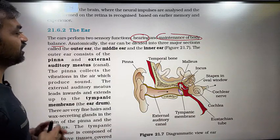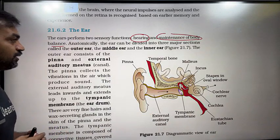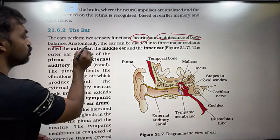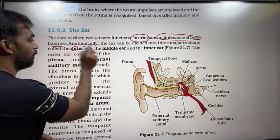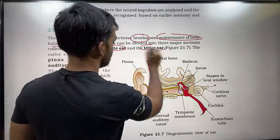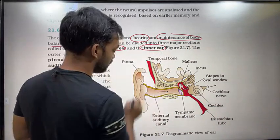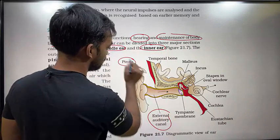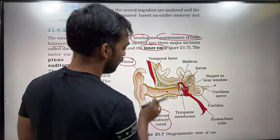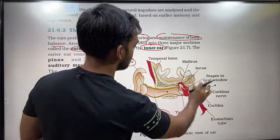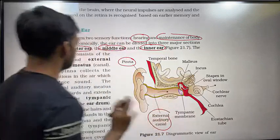Anatomically, the ear can be divided into three major sections: the outer ear, the middle ear, and the inner ear. The outer ear consists of the pinna and the external auditory canal.